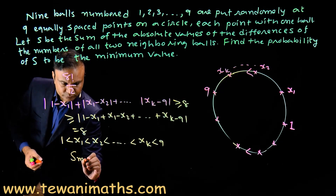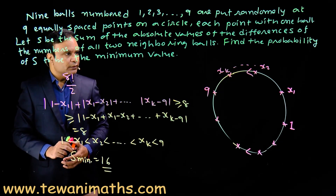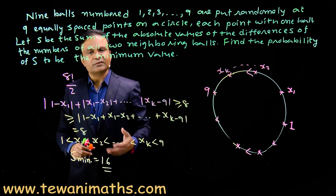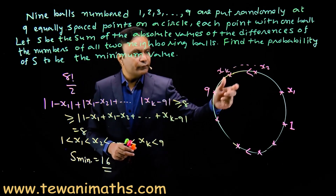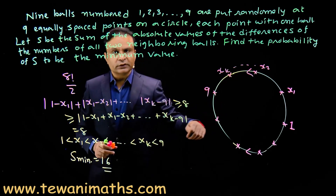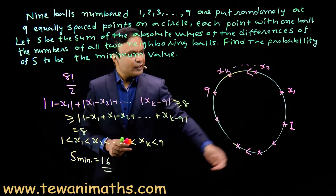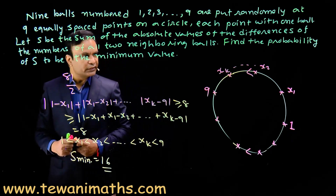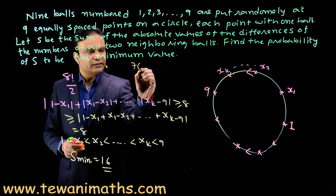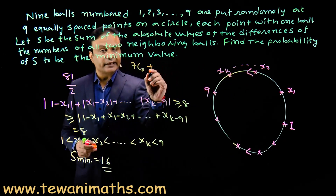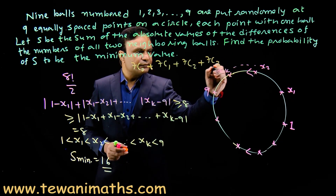We need to find the number of arrangements when S is minimum. On one route I consider k balls, where k ranges from 0 to 3 (since clockwise and anticlockwise are indistinguishable). Once we fix the number of balls on each route, the arrangement is uniquely determined because balls must be in increasing order. We choose k balls out of 7 for one route: 7C0 + 7C1 + 7C2 + 7C3 ways. So the number of favorable arrangements is 7C0 + 7C1 + 7C2 + 7C3 = 1 + 7 + 21 + 35 = 64.